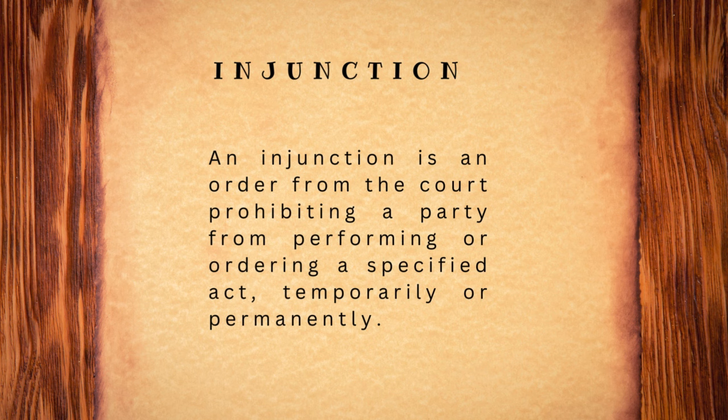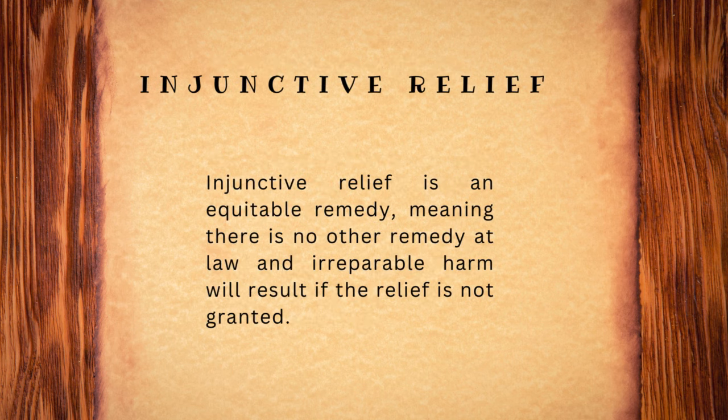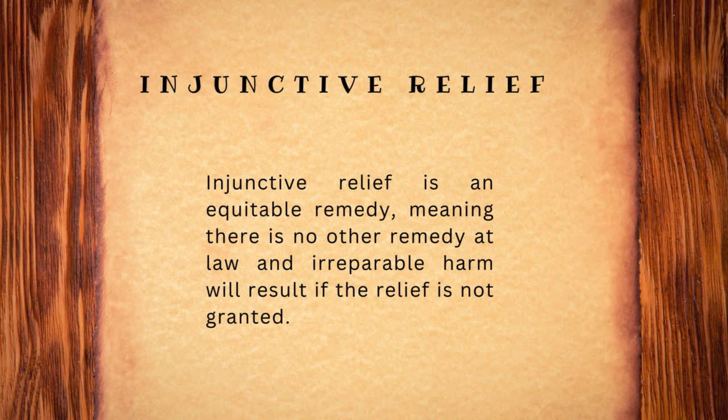An injunction is an order from the court prohibiting a party from performing or ordering a specified act, temporarily or permanently. Injunctive relief is an equitable remedy, meaning there is no other remedy at law. And if an injunction order is not in place, then the person filing the motion for injunctive relief will suffer irreparable harm. That's essentially what the shareholders were saying in Ex Parte Young — that no amount of money could help them. If the court does not stop the attorney general from enacting the new legislation, then they are going to suffer.